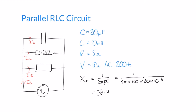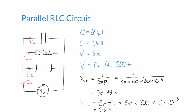Similarly, the reactance of the inductor XL uses the formula 2πfL. Substituting: 2π times 200 times 10 times 10 to the minus 3, giving a value of 12.57 ohms.